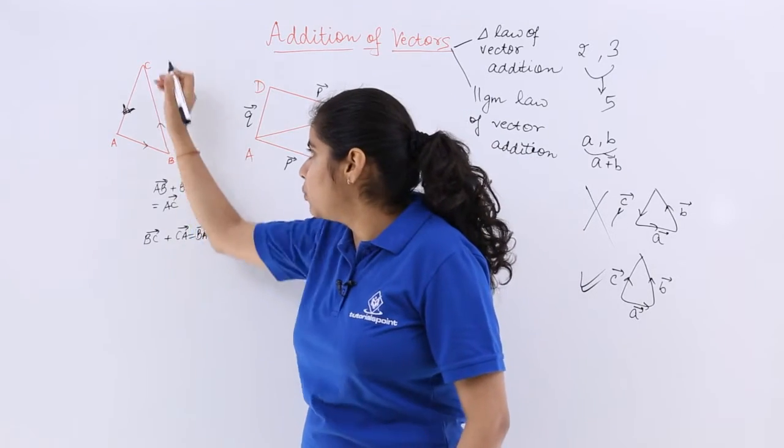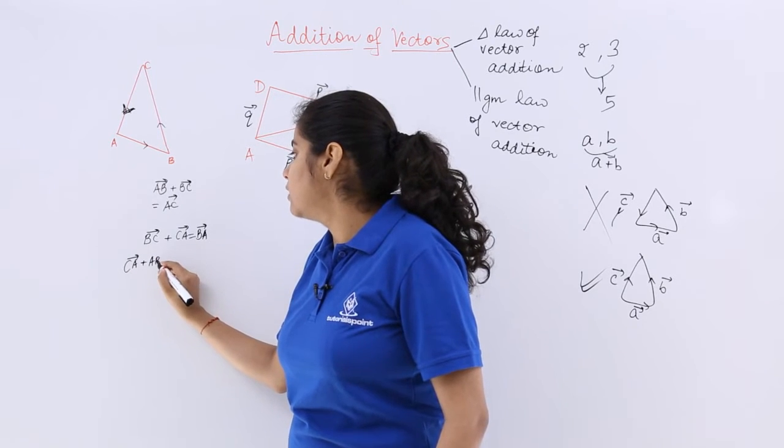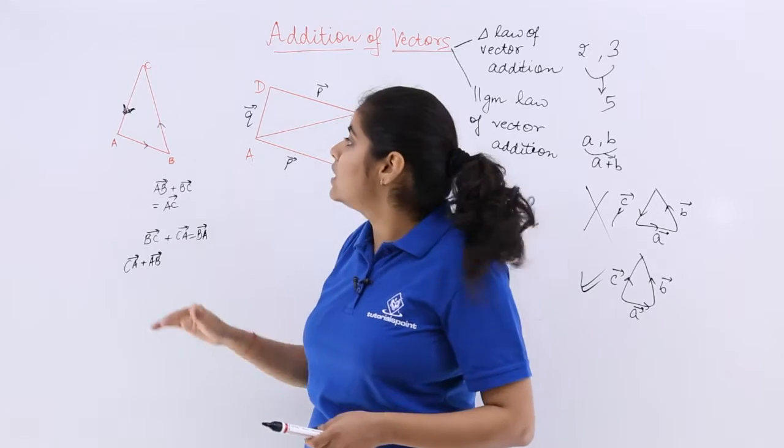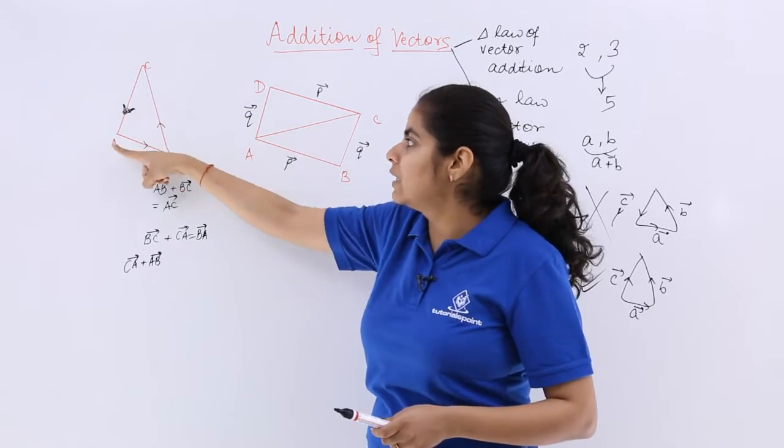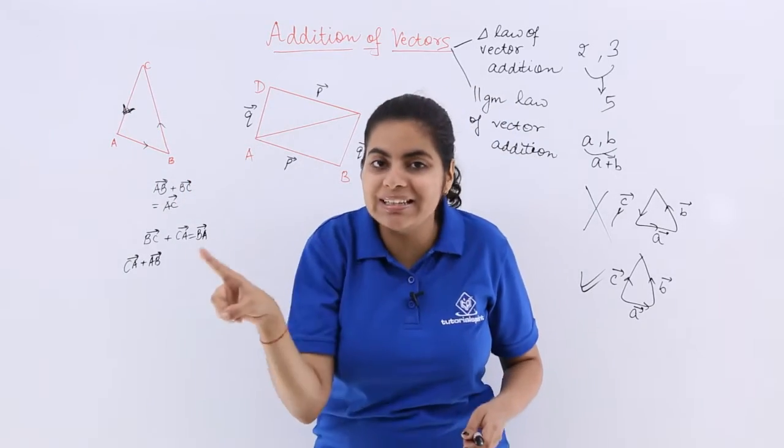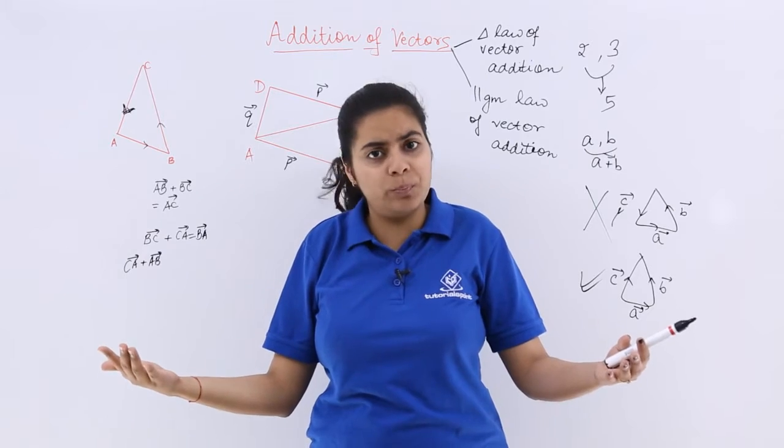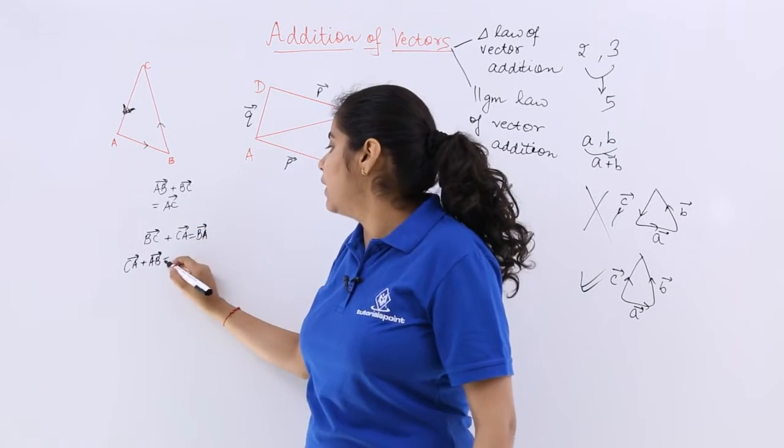Now again, if I have to practice and tell you what is CA vector plus AB vector. CA vector is going like this downwards, AB vector is following a cycle, it is being anticlockwise, but you do not have to write the resultant as BC because otherwise it will be a loop. We have to avoid a loop, so it will be CB vector.